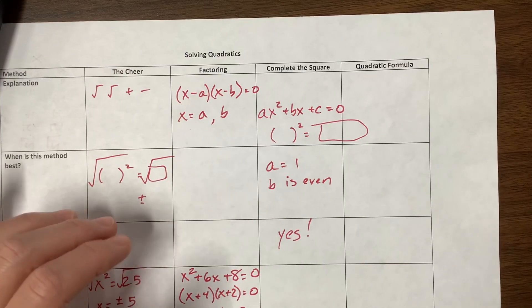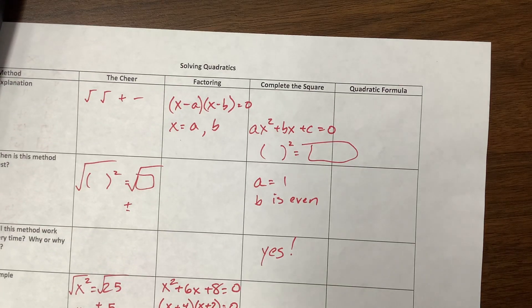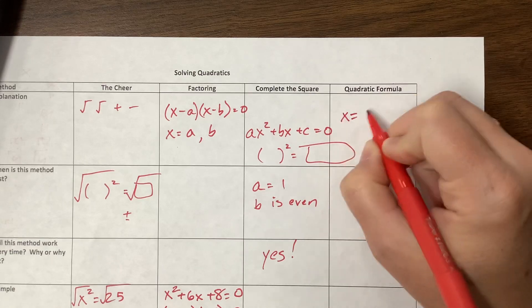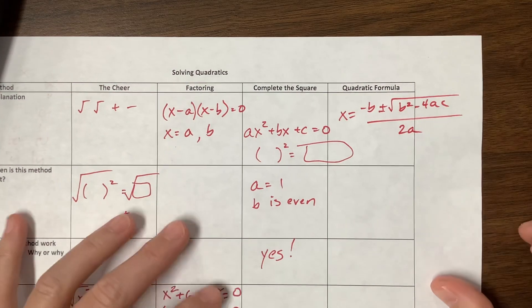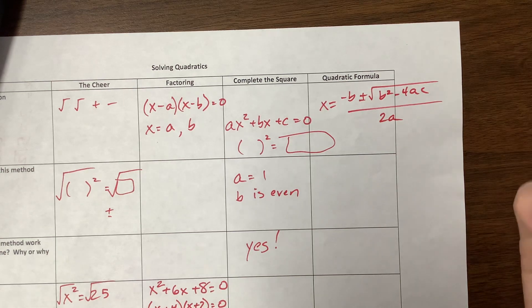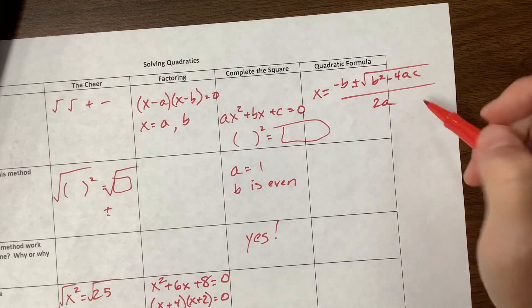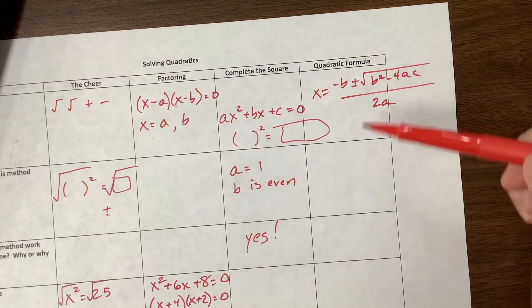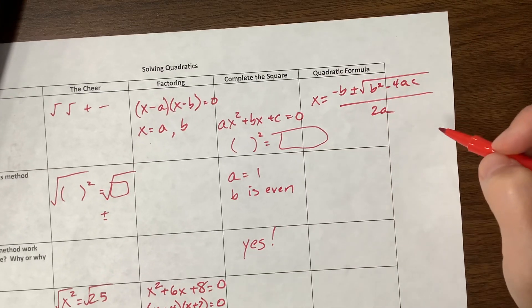The last method is the quadratic formula. I'm not going to derive it here — I may already have a video on that, or I'll make one. The quadratic formula is: x equals negative b plus or minus the square root of b squared minus 4ac, all over 2a. This will always work, but I find it tedious. If something factors easily I'll factor it; if a equals 1 and b is even I'll complete the square. I only use the quadratic formula when the problem is just messy.